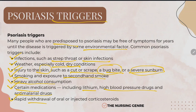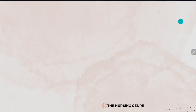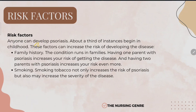Anyone can develop psoriasis, with about a third of cases beginning in childhood. Risk factors include family history — the condition runs in families. Having one parent with psoriasis increases your risk, and having two parents with psoriasis increases your risk even more.